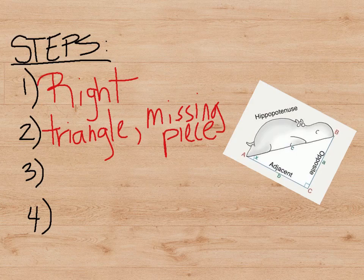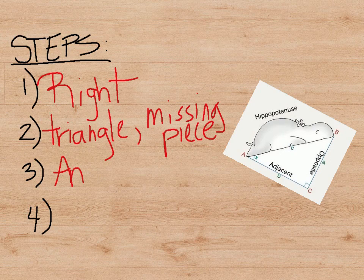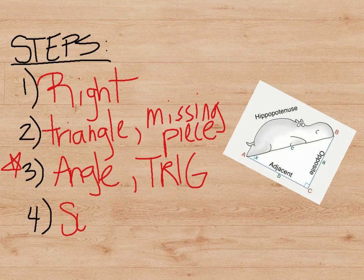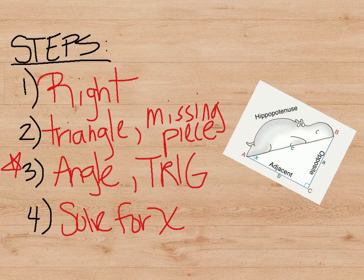Step three: circle your angle of reference and determine which trig function that you will use. You've already practiced that to death. So now we're able to do that, and the last step would be then to solve for X. And that's it.